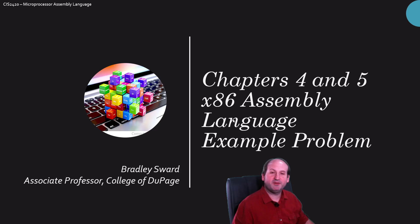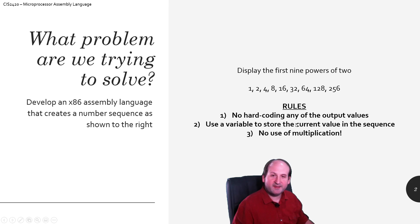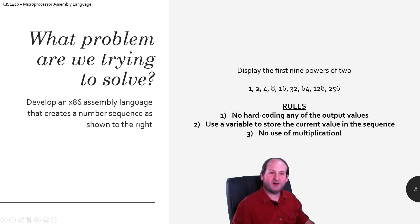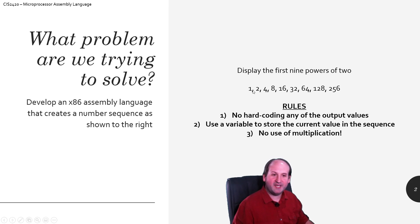So what is that problem? It's something similar to something I would give at the homework or assignment level. I want to say, let's display the first 9 integer powers of 2. So 2 to the 0th power is 1, and it's basically doubling every time: 1, 2, 4, 8, 16, 32, and so forth, all the way up to 256.